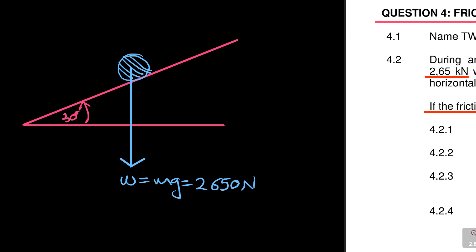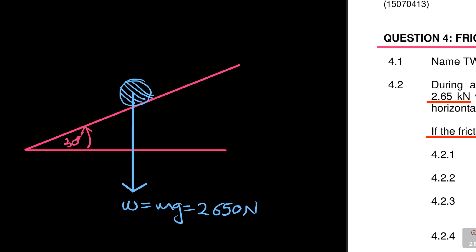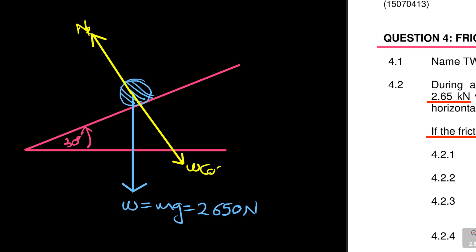That's very important and then you have to just finalize everything on this block. You definitely need to know the components of this. So you've got the reaction, which is your normal reaction N, and then opposite it you have the component of weight, which is W cos 30, which is the same as saying 2,650 cos 30.